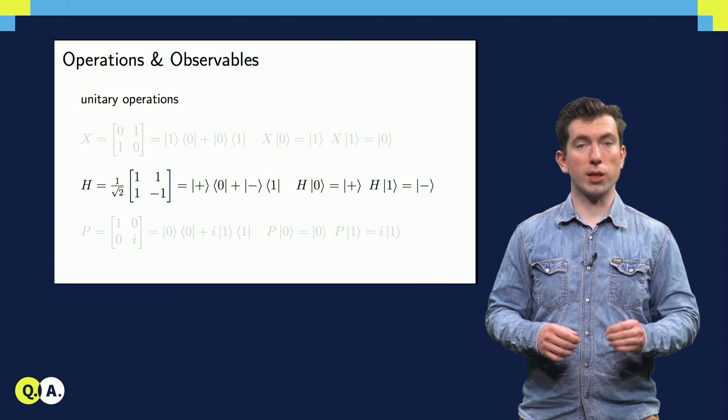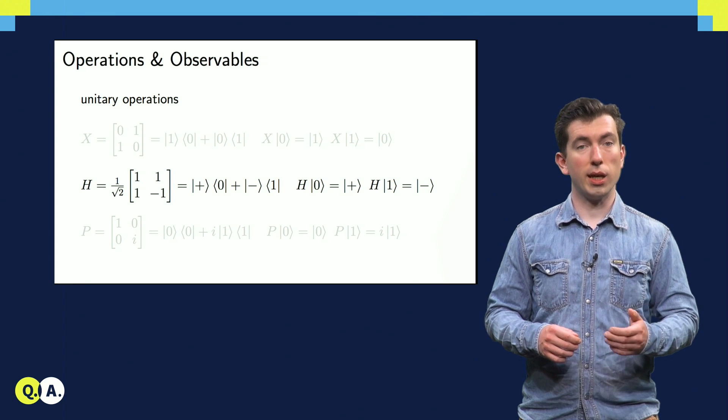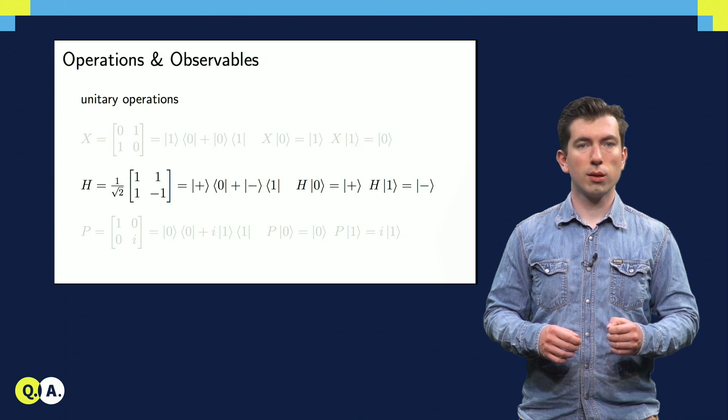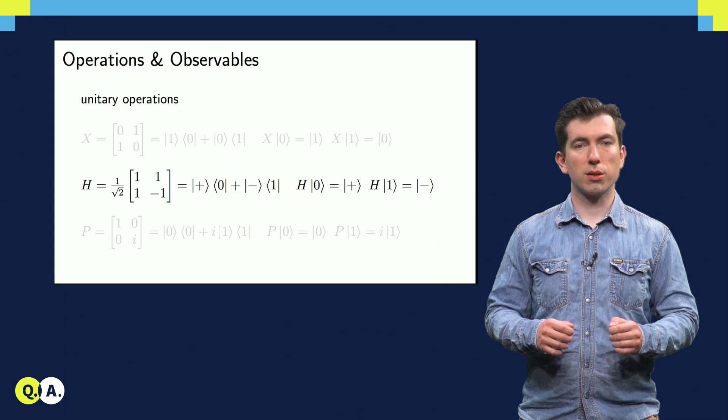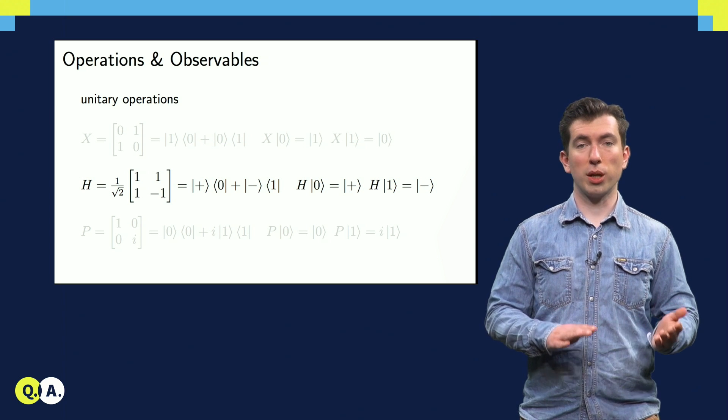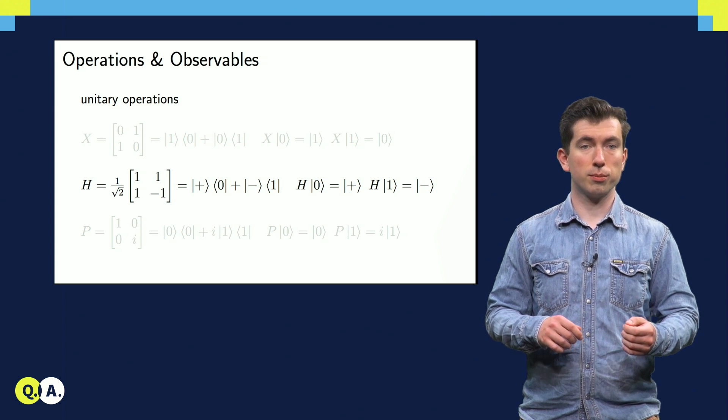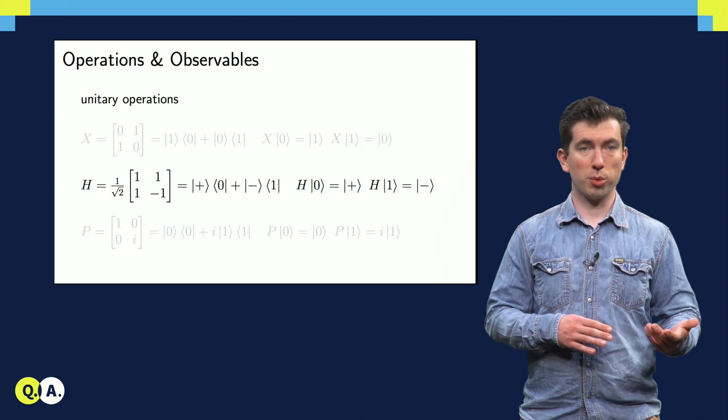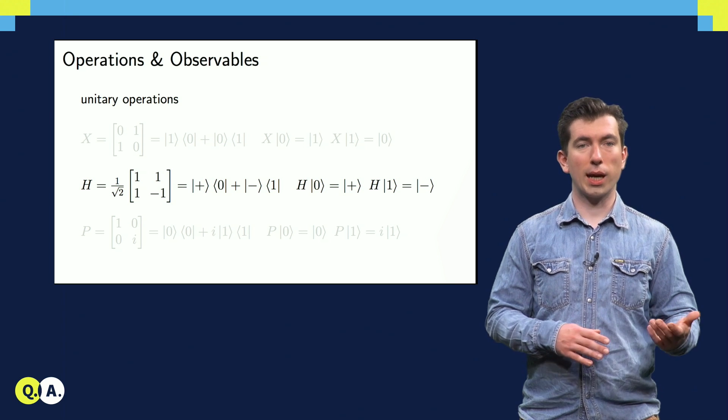Now let's take a look at a more interesting operation, the Hadamard gate, H. As you can see, this changes the basis from the 0-1 basis to the plus-minus basis that we discussed earlier. Put in a 0, get out a plus. Put in a 1, get out a minus.